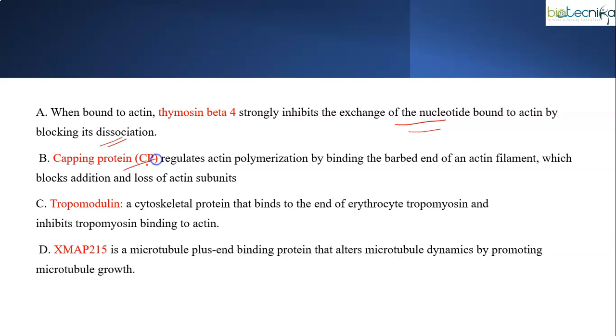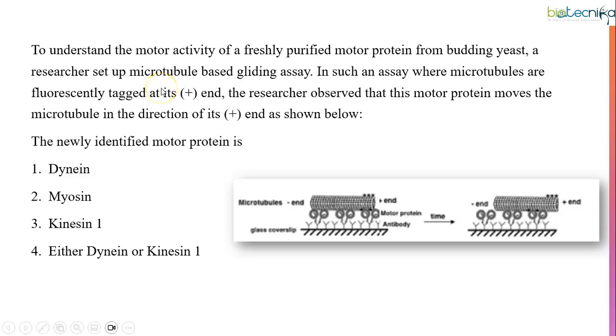When bound to actin, thymosin beta-4 strongly inhibits the exchange of nucleotide, blocking its dissociation. Capping protein regulates polymerization by binding the barbed end - the plus end - which blocks addition and loss of subunits. Tropomodulin binds to the ends of erythrocyte tropomyosin, thereby inhibiting tropomyosin binding to actin. Exmap 215 is a microtubule plus-end directed binding protein which alters microtubule dynamics by promoting microtubule growth.